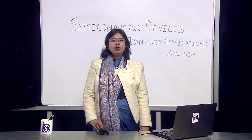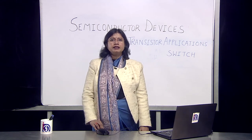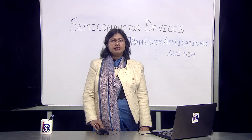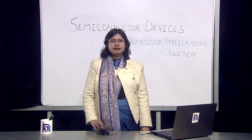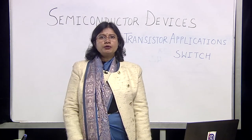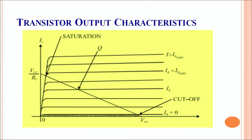Let's recall the common emitter configuration and its output characteristics. The transistor output characteristics of the common emitter configuration are shown here in the form of a graph. We plot IC as a function of VCE, that is the collector-emitter voltage, keeping IB, the base current, as constant. For different values of IB, the graph is shown here.